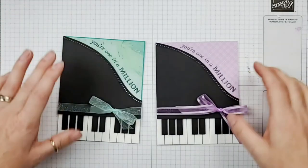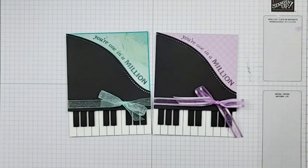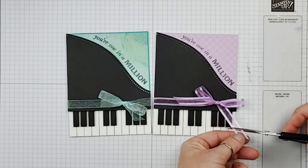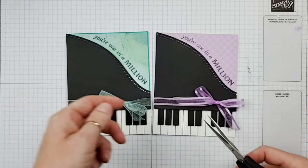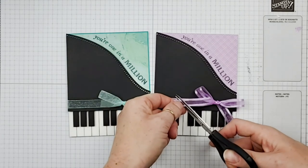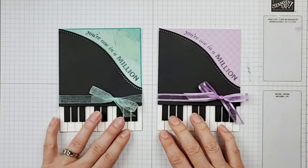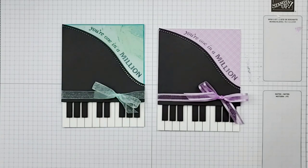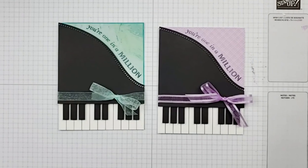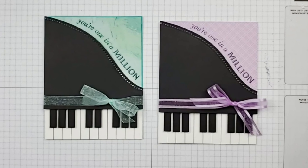Here are the two different designs using the Quite Curvy stamp set and the Curvy dies to make a piano card. So thanks for watching guys. And I hope that you'll join me again next week for my next Facebook Live. And if you're in Canada, make sure you sign up for our Stamp Camp coming up in July. And it's not too late to register for my technique class coming up next week. So have a great week and we'll catch you next time.